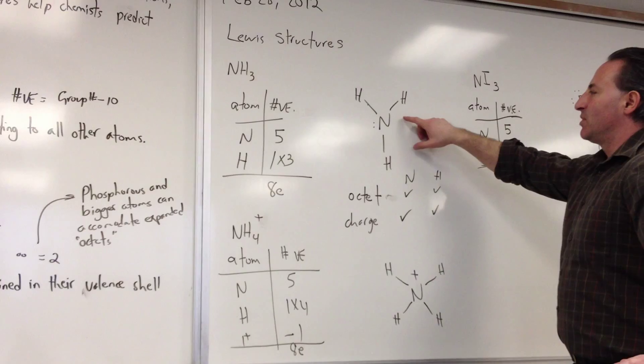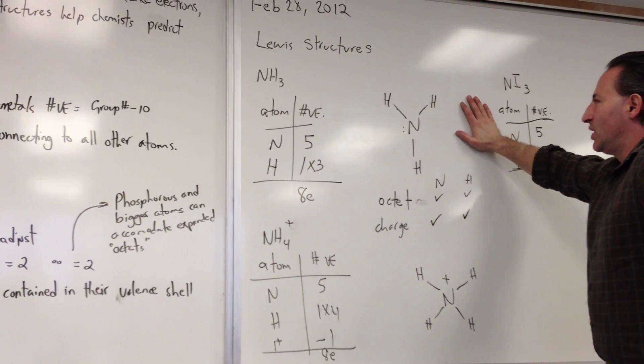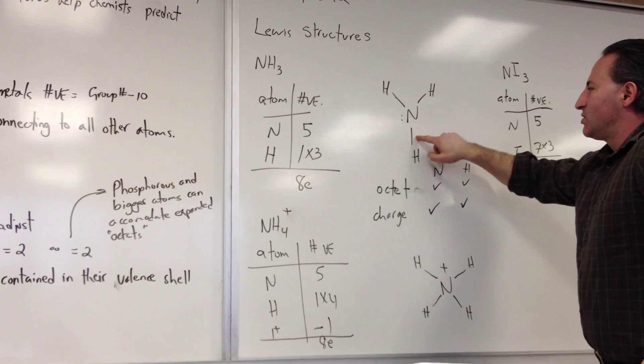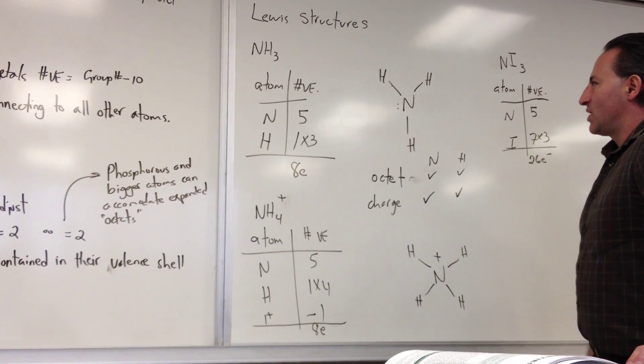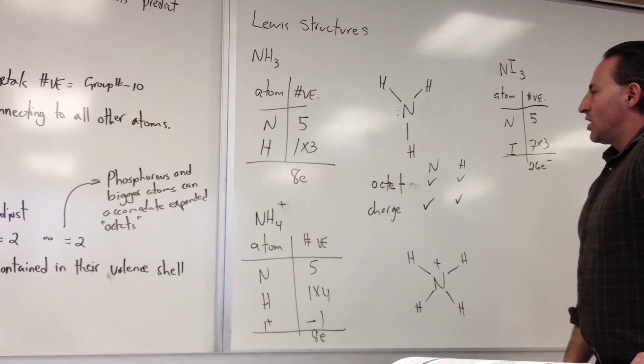When we draw ammonia, we put the central atom as nitrogen, then we put the hydrogen atoms as satellites. That uses up 6 electrons. These 3 bonds use up 6 electrons, and then the last 2 electrons are placed on the central atom. So that uses up 8 electrons.